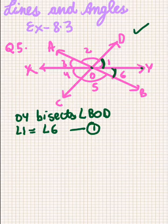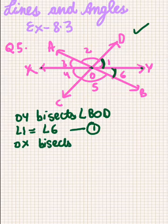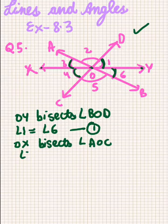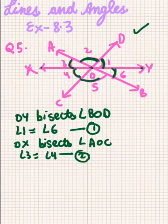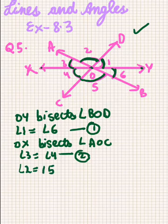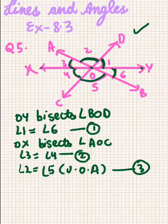Similarly, ray OX bisects angle AOC, so angle 3 equals angle 4 — this is our second equation. Now, angle 2 and angle 5 are vertically opposite angles, so angle 2 equals angle 5, giving us our third equation.